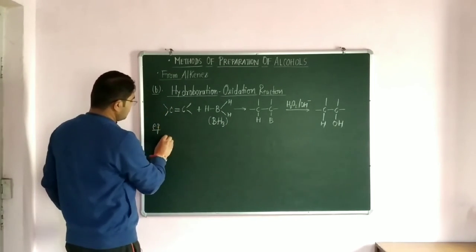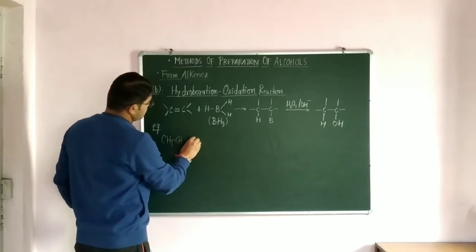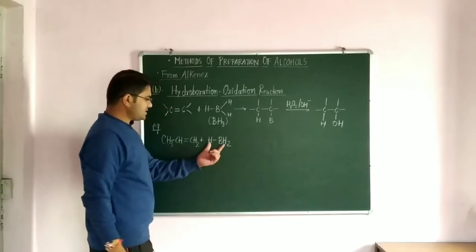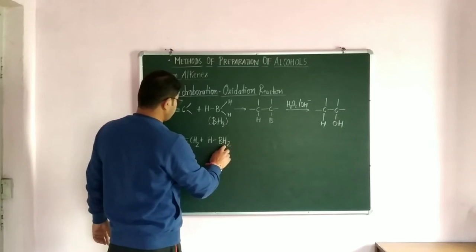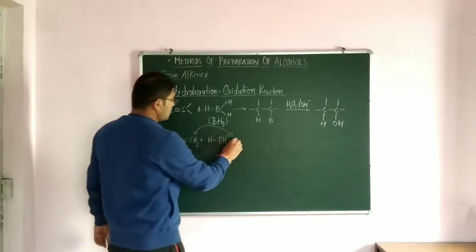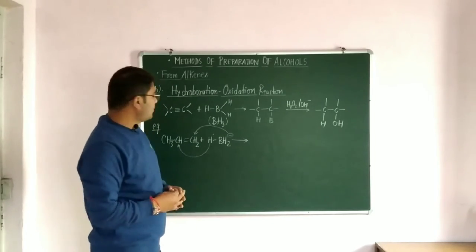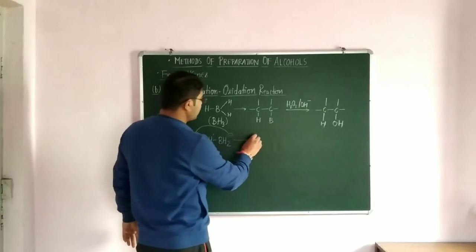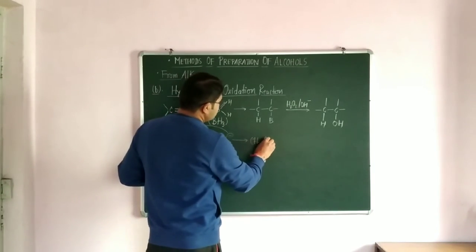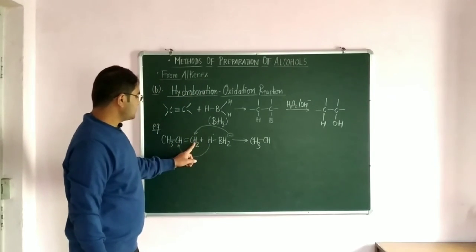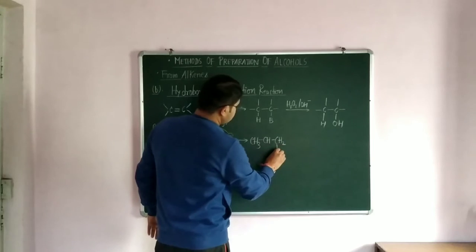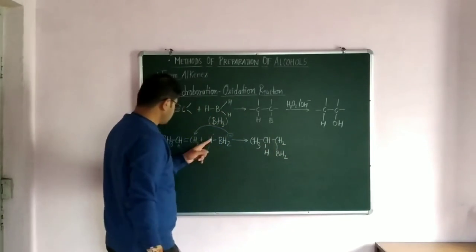Taking propene (CH3CH=CH2) as an example: BH3 is written as H-BH2, and the BH2 part attaches to the carbon atom containing the higher number of hydrogens. This is in accordance with anti-Markovnikov's rule. BH3 is an electron-deficient compound and attaches to the carbon with the higher number of hydrogen atoms. It gives BH2 on one carbon and H on the other.